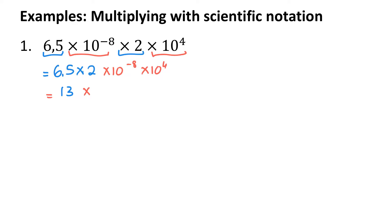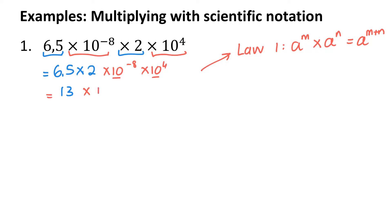Then I'm going to take the powers of 10 and multiply those together. 10 to the power of negative 8 times 10 to the power of 4 — I can use the first law of exponents, which says if I've got a power with one base times by a power with the same base, I add my exponents. So my common base is 10, and I have 13 times 10 to the power of negative 8 plus 4, which simplifies to 13 times 10 to the power of negative 4.